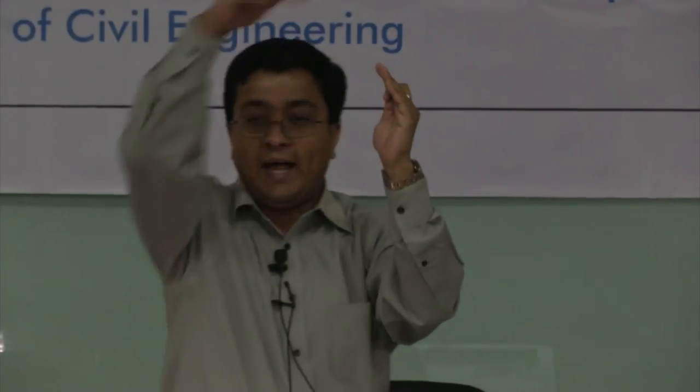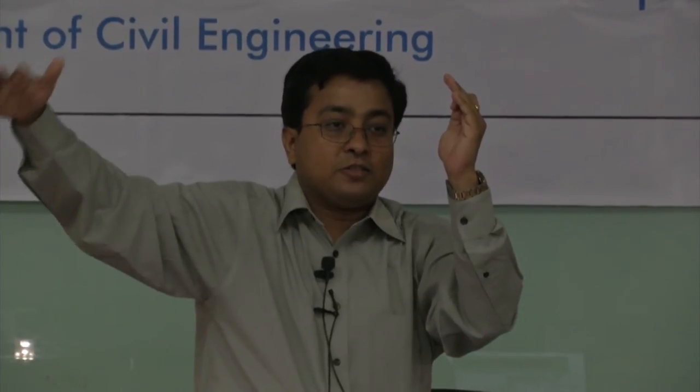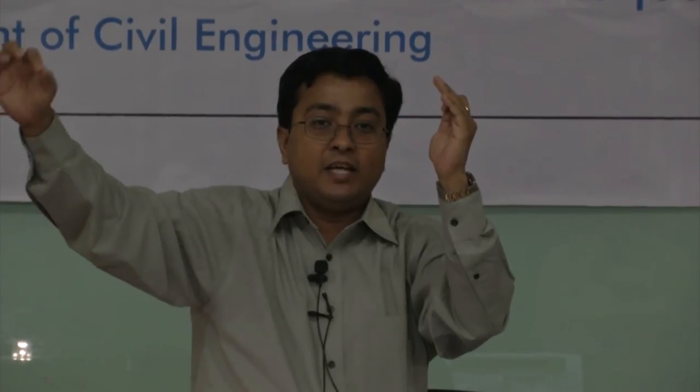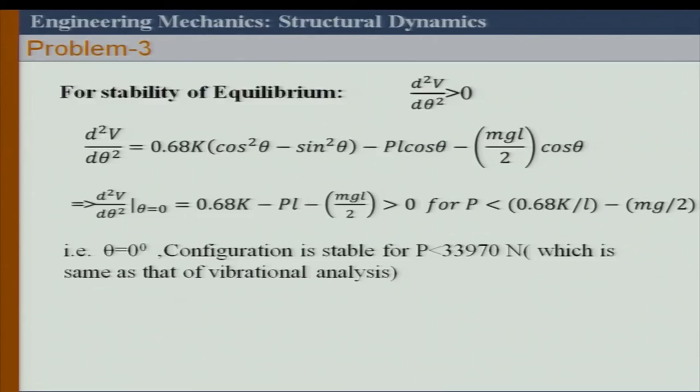In the dynamic case, with that critical P the system goes to infinite oscillation — it can't come back. What we have shown through potential energy is that as long as P is less than this value it is stable. As soon as P equals 34 kN, it is going to collapse — it is unstable. So we can link the dynamic and static stability results. What I have done today is also tell you why virtual work is necessary and why potential energy comes into play for certain dynamic problems.